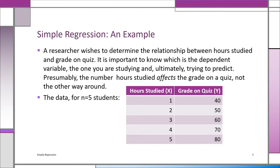In regression, there's something new we didn't have in correlation: we're going to come up with a mathematical equation where the variable you're studying — in this case, grades — is the outcome variable, the y. The variable that's independent and affects y is called x, and we have to know which is x and which is y. In correlation, we were just looking at association. Here, we clearly label hours studied as x and grade on quiz as y.